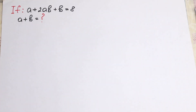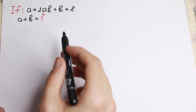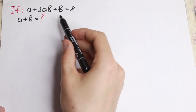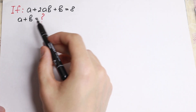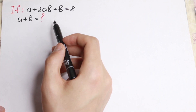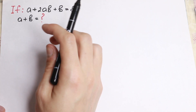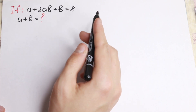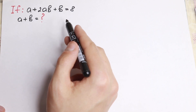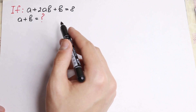Hello everyone! In this video we are going to solve this interesting algebra problem. We have that a plus 2ab plus b equals 8, and we need to find the sum a plus b. I'm going to show you how we can solve this.